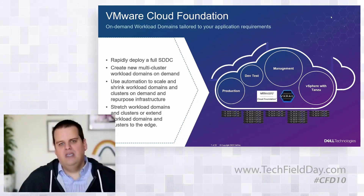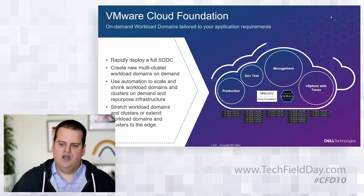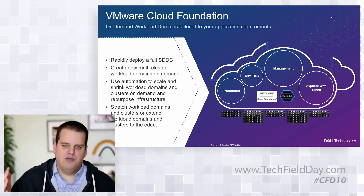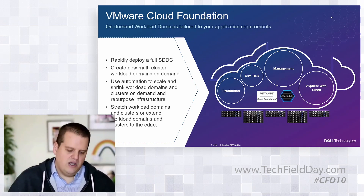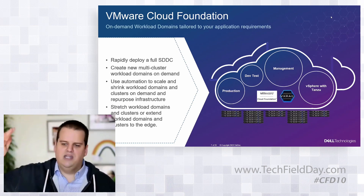Our smallest scale is our consolidated architecture, deploying on a minimum of four nodes. Traditionally, in consolidated architecture, you wouldn't run workload applications in the management bubble — you want to segregate management and workload applications so if you lose workload, management stays up, and vice versa. But consolidated architecture runs workload virtual machines inside that management domain and scales up from there.